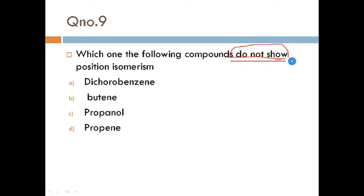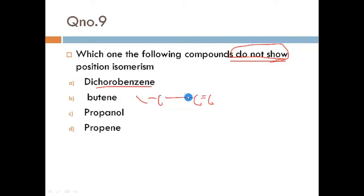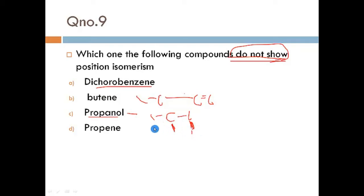Next question: which of the following compound does NOT show position isomerism? Looking at the options: dichlorobenzene (benzene with two chlorines) shows position isomerism. Butene shows position isomerism because the double bond can be placed at different positions. Propanol also shows position isomerism because the OH group can be attached at different positions to give different isomers.